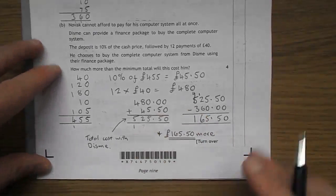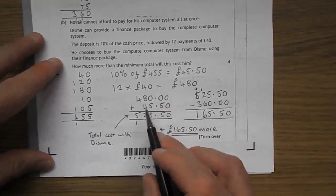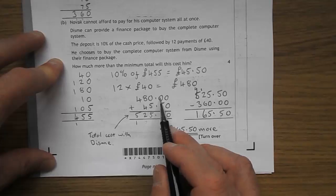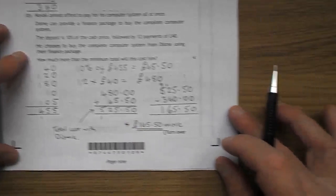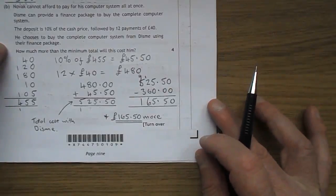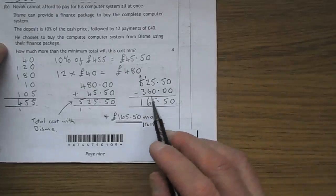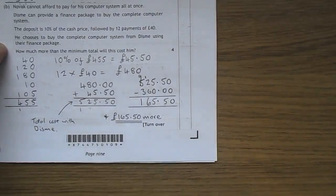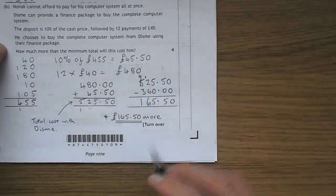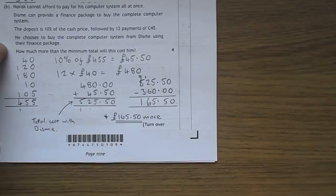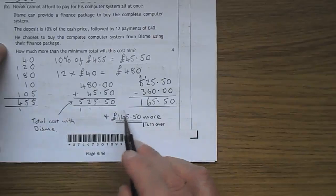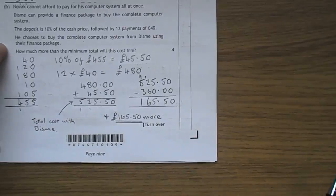Add up the £480 plus the deposit. This will cost them £525.50. And don't forget, earlier on, we could have got the whole thing for £360 if you picked the cheapest ones. So there's a subtraction: £165.50 more. So £165.50 more if he chooses that package.